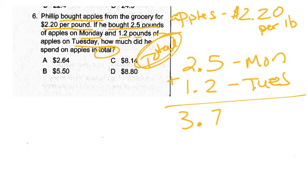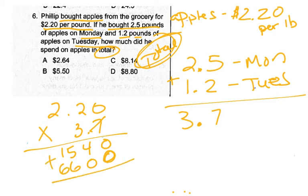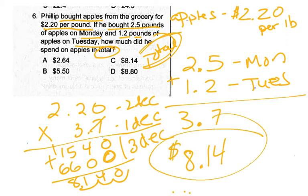He spent $2.20 per pound, so I'm going to take $2.20 and multiply it by 3.7 pounds. 7 times 0 is 0. 7 times 2 is 14, regroup. 7 times 2 is 14 plus 1 is 15. Then for the ones place, I need my 0 placeholder. 3 times 0 is 0. 3 times 2 is 6. 3 times 2 is 6. Adding together: I have 2 decimal places here and 1 decimal place here, so I need 3 decimal spots total. Counting 1, 2, 3 — decimal point goes there. So he spent $8.14 on apples.